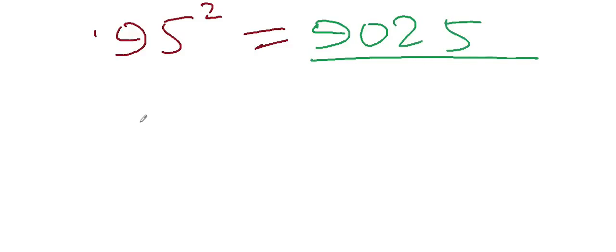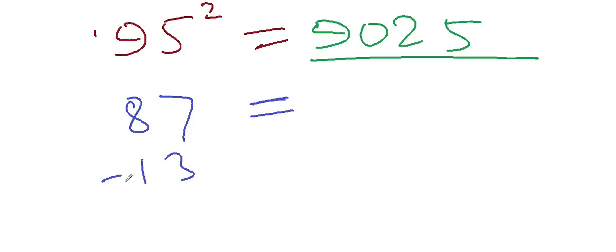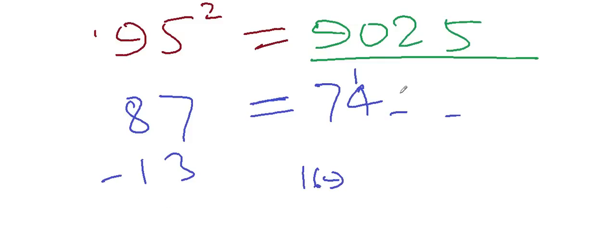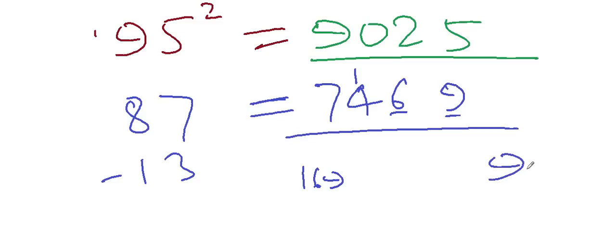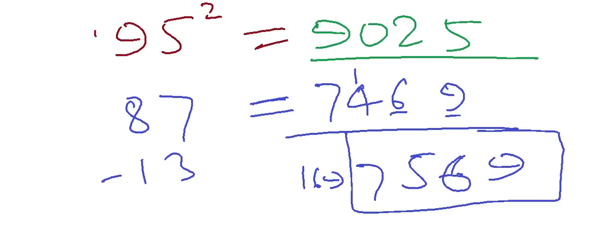Let's try 87. The difference is 13, so we subtract 13 from 87 itself: 7 minus 3 is 4 and 8 minus 1 is 7, giving us 74. Then the square of 13 is 169, so we carry the 1. The answer is 7569. Simple! I think you understood this, so enjoy and let's end our session here.